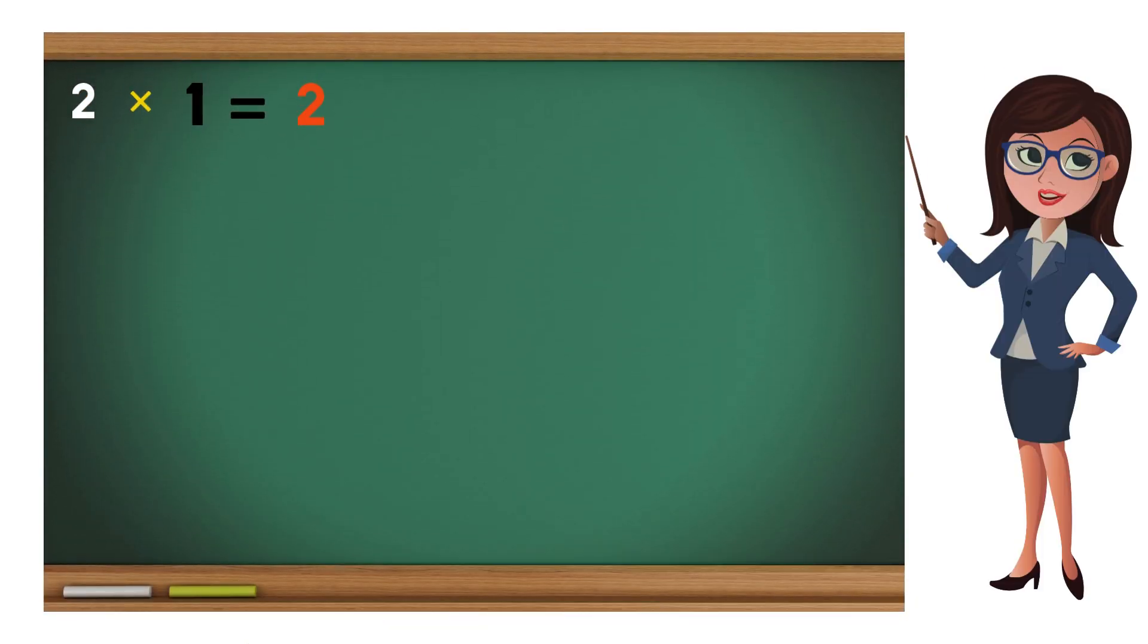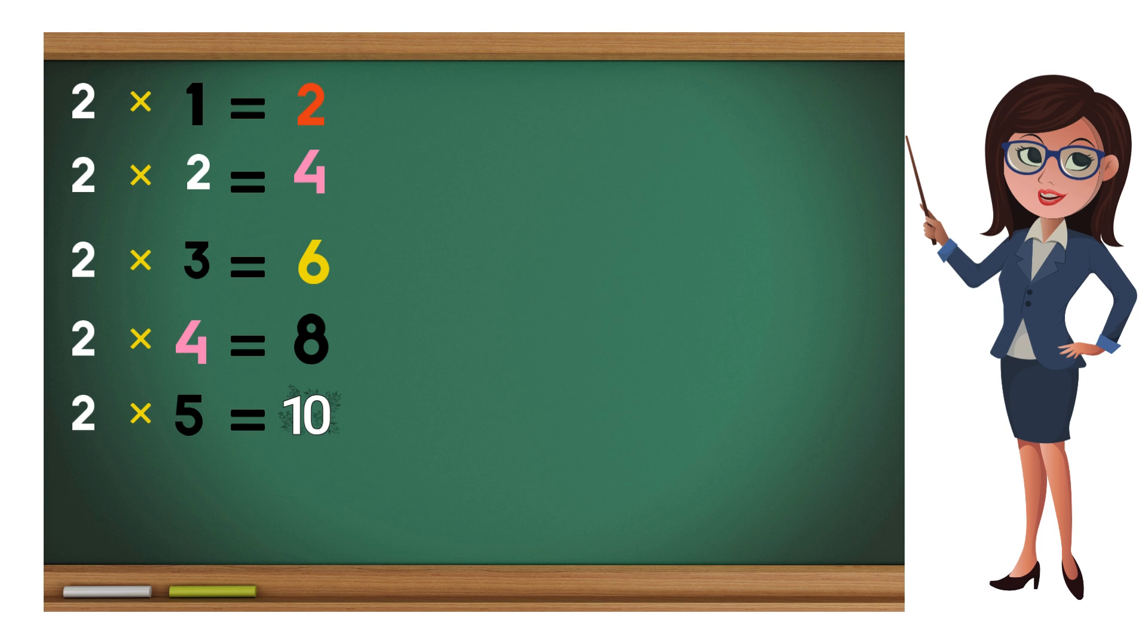The table of two goes like this. 2 times 1 equals 2. 2 times 2 equals 4. 2 times 3 equals 6. 2 times 4 equals 8. 2 times 5 equals 10.